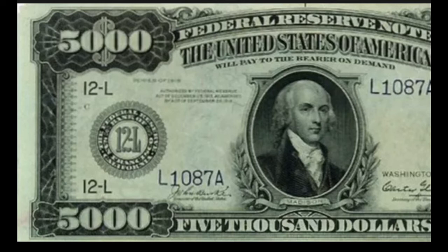Fun fact eleven: a hundred dollar bill costs less than twenty cents to produce. A one and two dollar bill costs 5.6 cents per note. A five dollar bill costs eleven cents per note. A ten dollar bill costs eleven point seven cents per note. A twenty dollar bill costs ten point eight cents per note. A fifty dollar bill costs twelve point nine cents per note. And the hundred dollar bill costs thirteen point two cents per note.